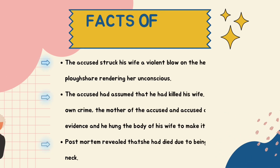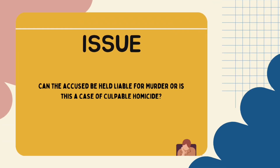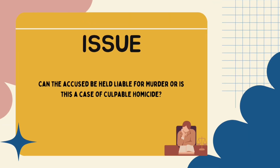The facts are that the accused attacked his wife's head forcefully with a plough, after which he assumed that she was dead. To hide his crime, he and his mother created false evidence and staged a suicide by hanging the wife. However, the postmortem revealed that she died due to being hung by the neck and not because of the attack on her head. The issue that arises is whether the accused should be held liable for murder or not.